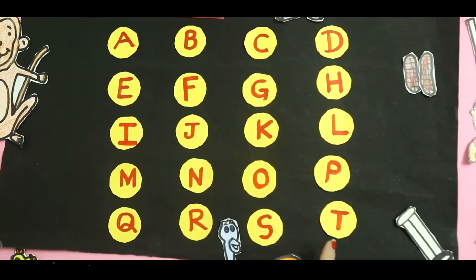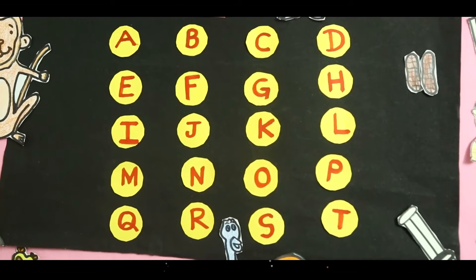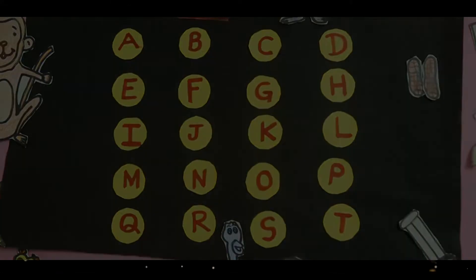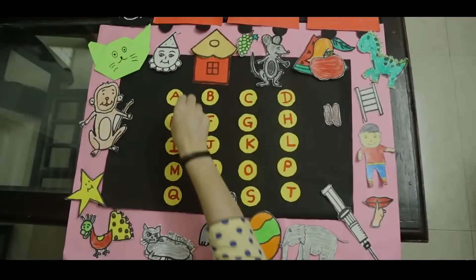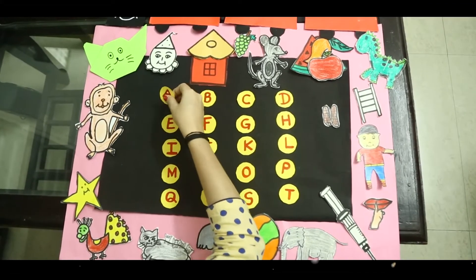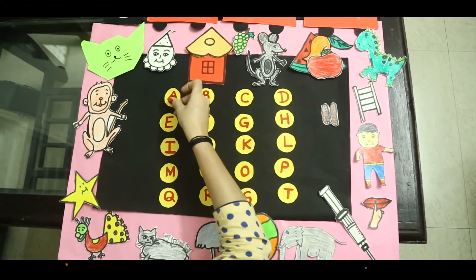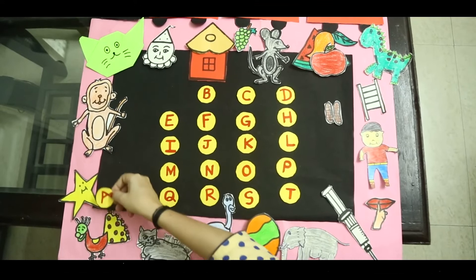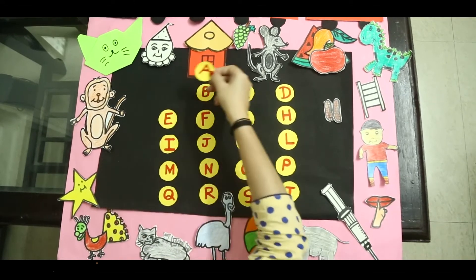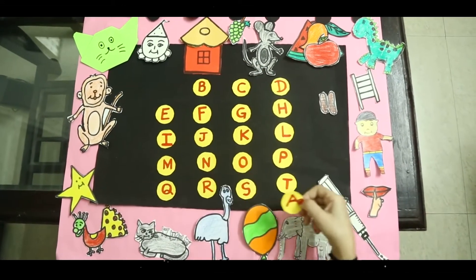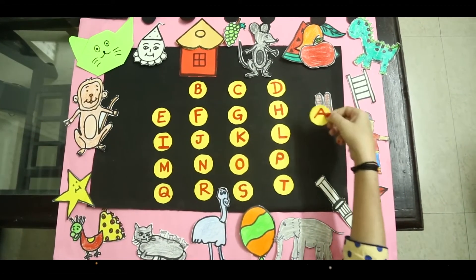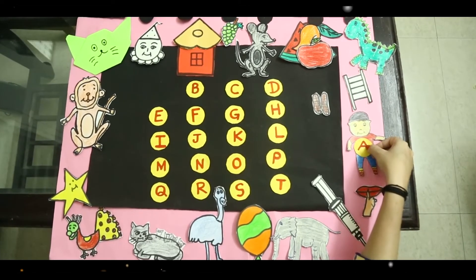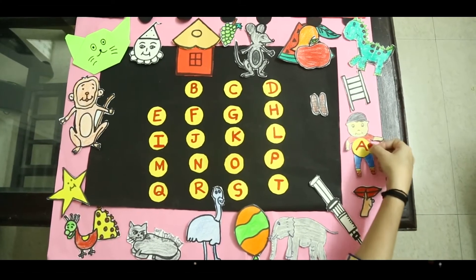Now we will do a small activity. Which letter is this? A, A, M, M, D. Where is A? Good. Very good.